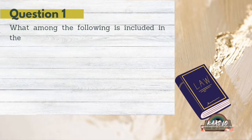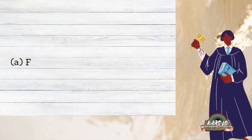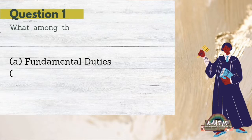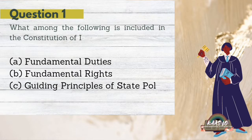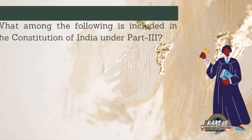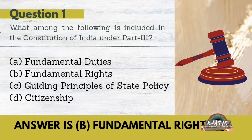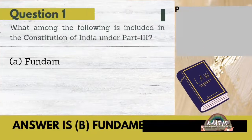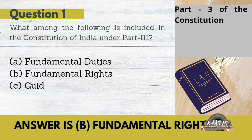Question 1: What among the following is included in the Constitution of India under Part 3? The options are A. Fundamental duties, B. Fundamental rights, C. Guiding principles of state policy, D. Citizenship. The answer to this question is B. Fundamental rights.